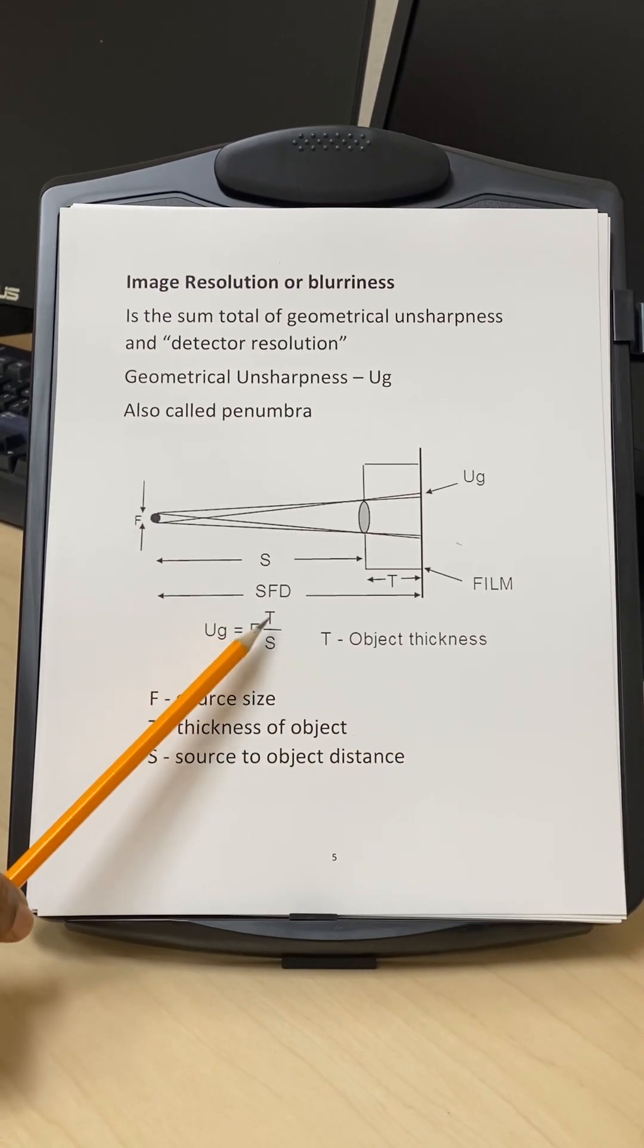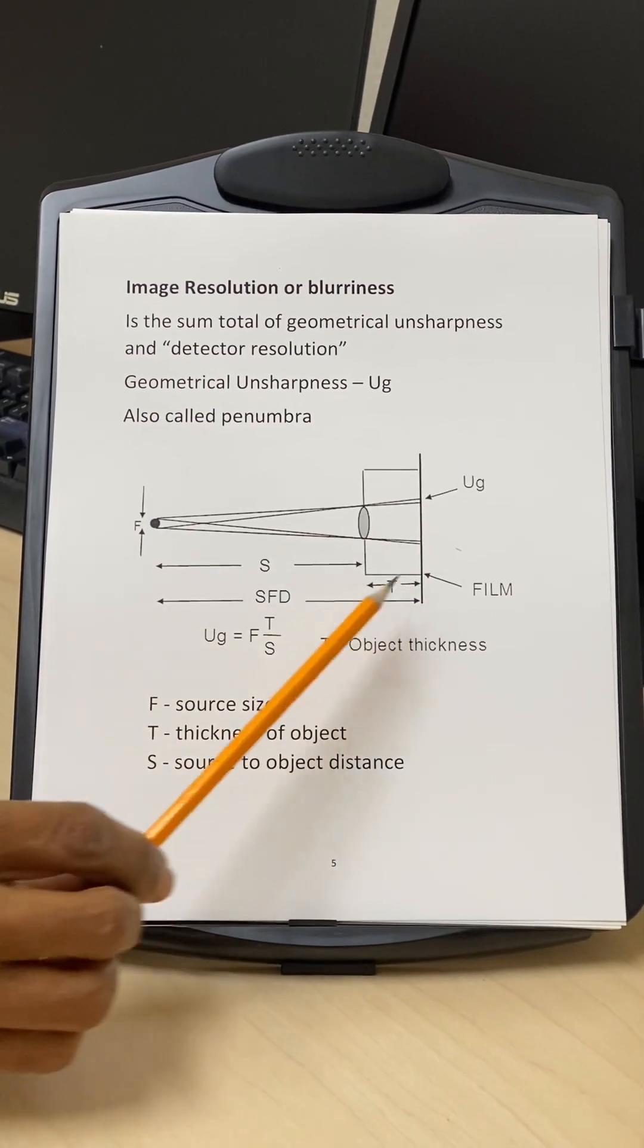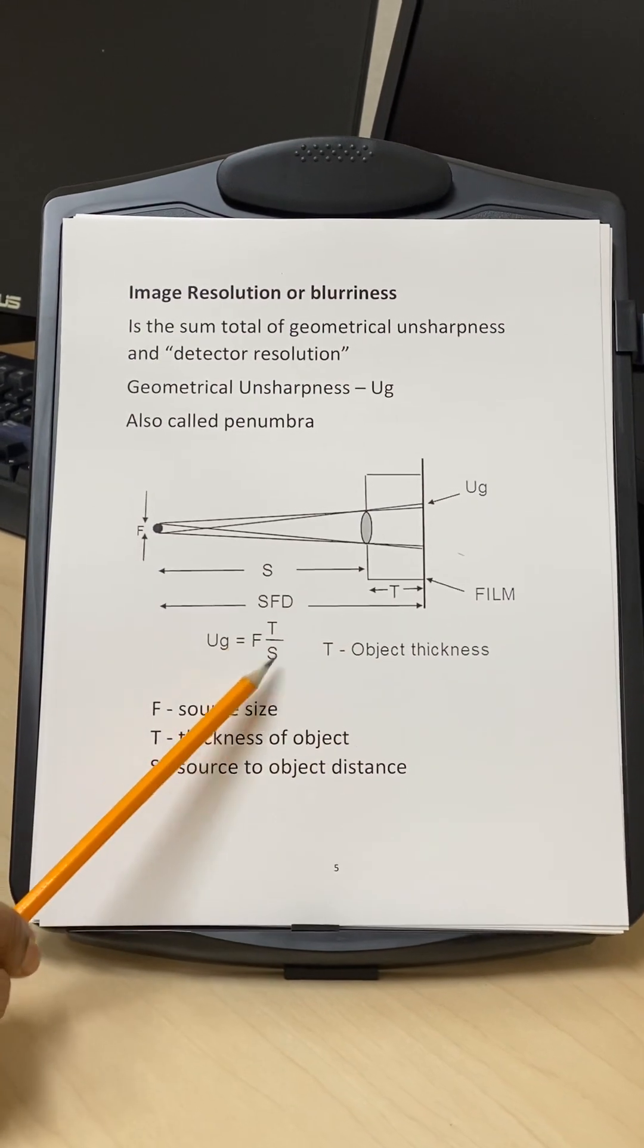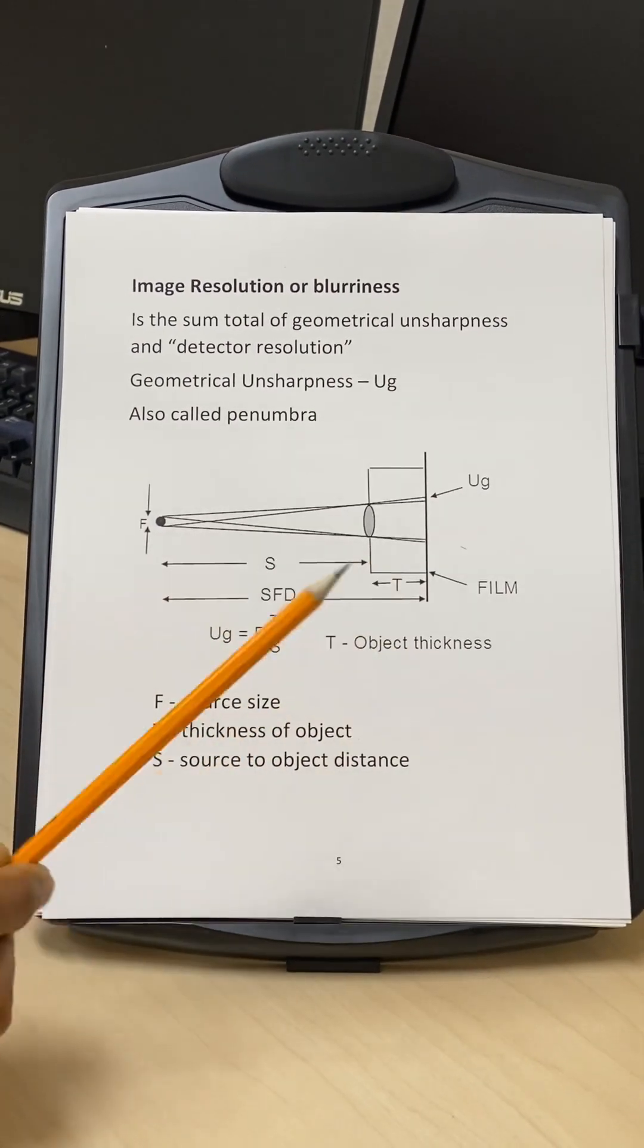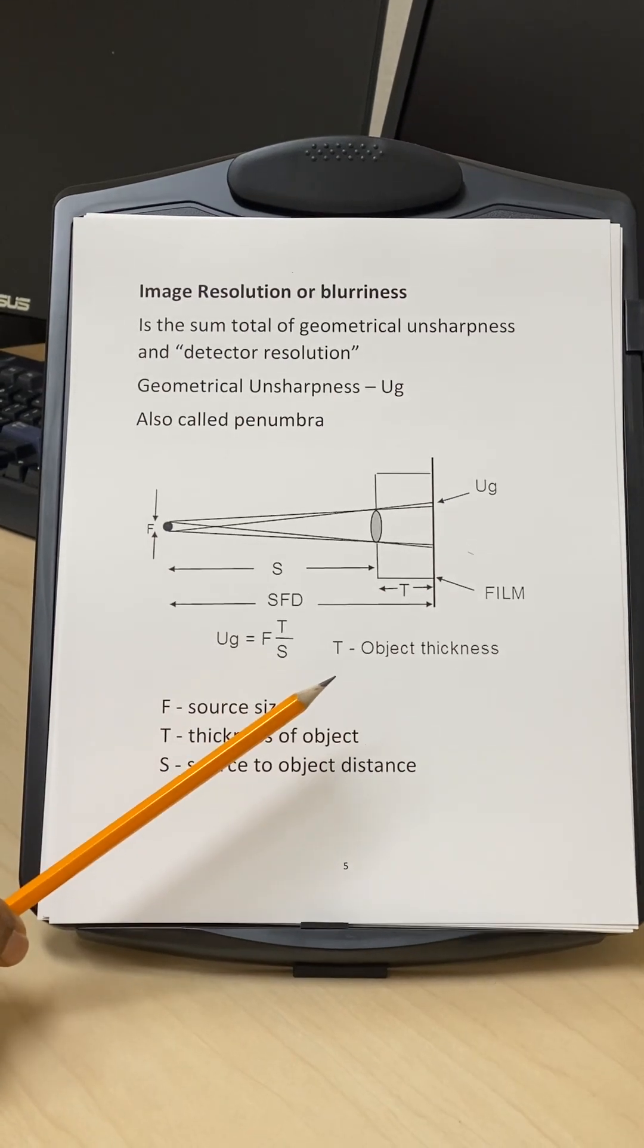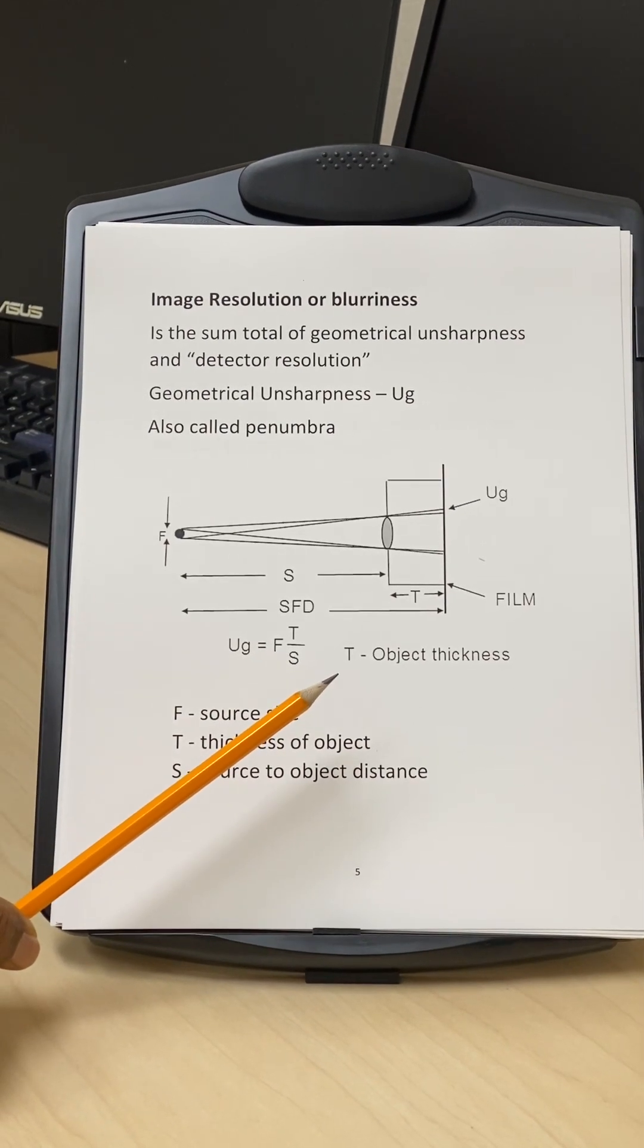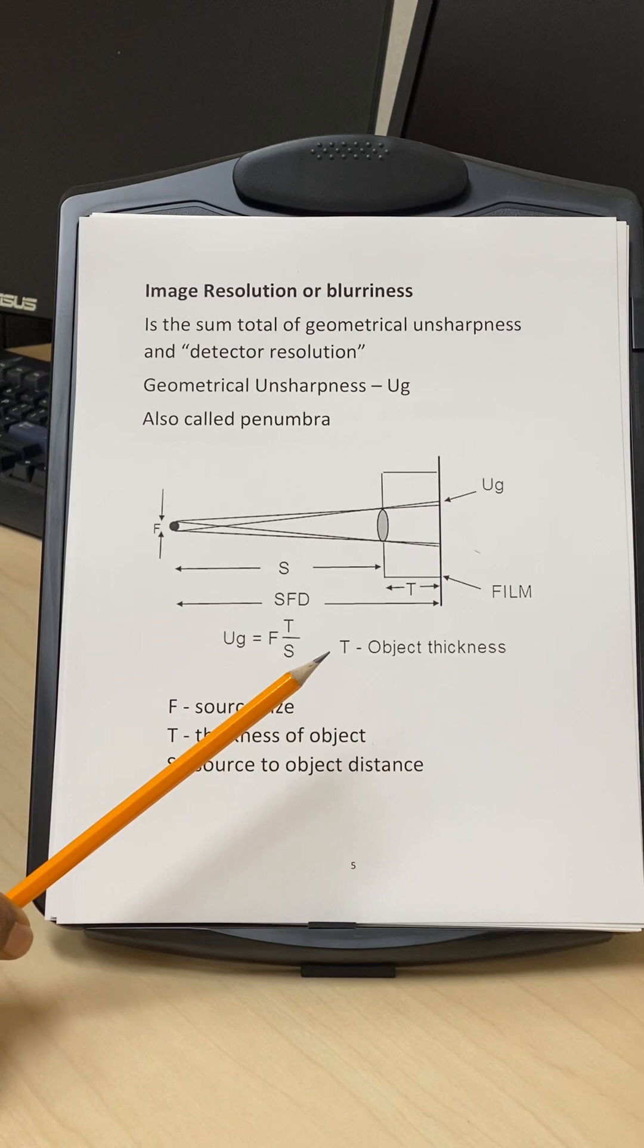which is F source size times T, which is this distance here. And then S is from the source to the object distance. So this number basically should be less than 0.5 millimeter. This is what we use for the film.